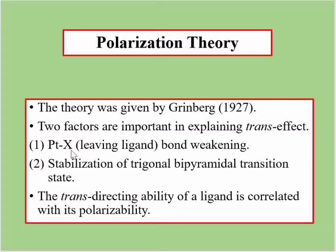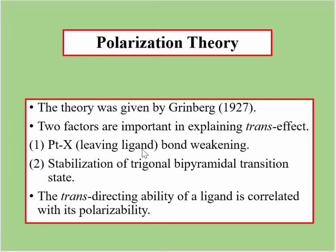If the Pt–X bond is weak, it will be easier to break, and when it is easier to break, the new ligand will come in — that is the trans effect, so the rate of reaction is fast. If we see the stabilization of the trigonal bipyramidal transition state, when the intermediate state is more stable, the rate of substitution reaction increases. These two factors are the basis of the two theories: polarization theory and pi bonding theory.